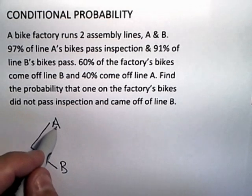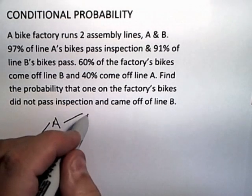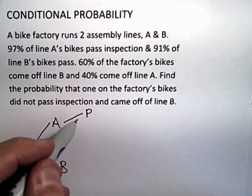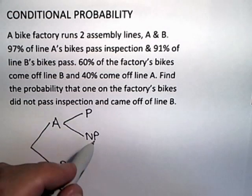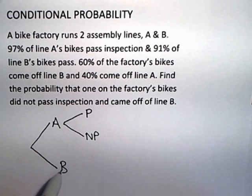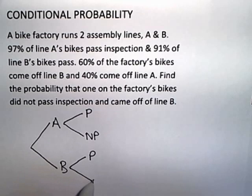Now, once a bike is assigned to assembly line A, it's either going to pass inspection, I'll use P, or it's going to not pass inspection, I'll use NP. Same is true of B. If a bike comes out of assembly line B, it's going to end up passing or not passing. That's an easy way to see what's going on. And I can use the tree diagram to actually label my probabilities and get my answer.